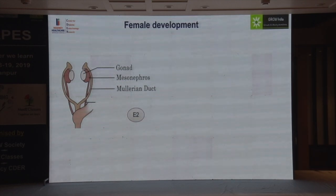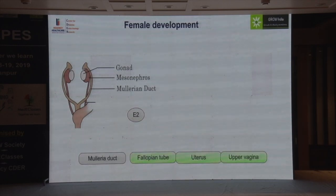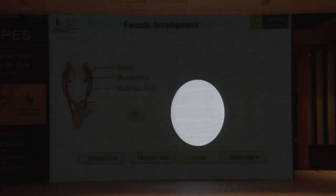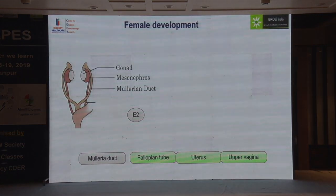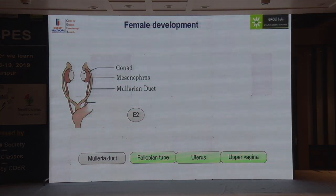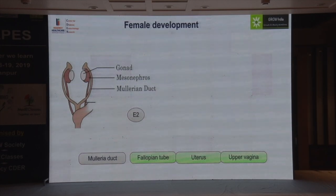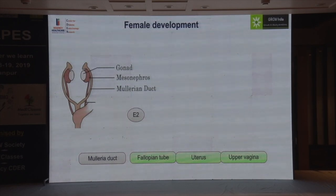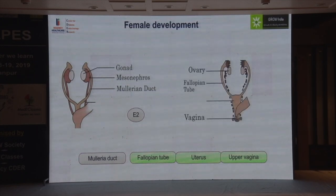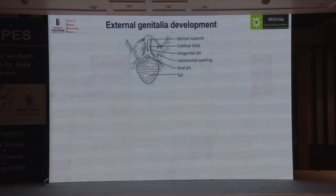Without testosterone, estrogen will cause further progression of Müllerian ducts into fallopian tubes, uterus, and the upper part of the vagina. The lower part of the vagina develops separately. So even in androgen insensitivity syndrome, you may have a blind vagina — just having a vagina doesn't mean it is not XY DSD, because a blind vagina can form from the lower part of the urogenital sinus.